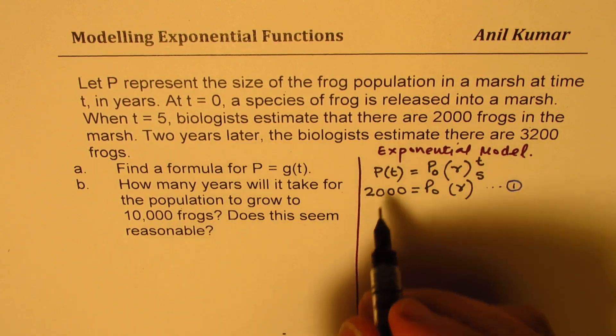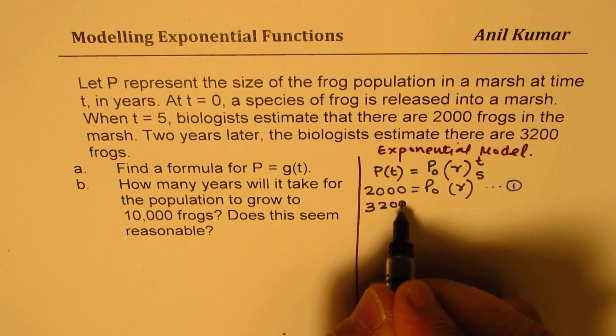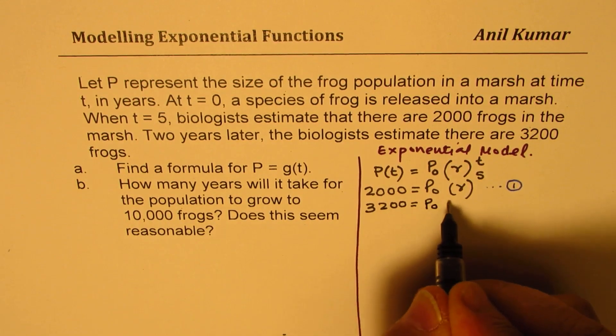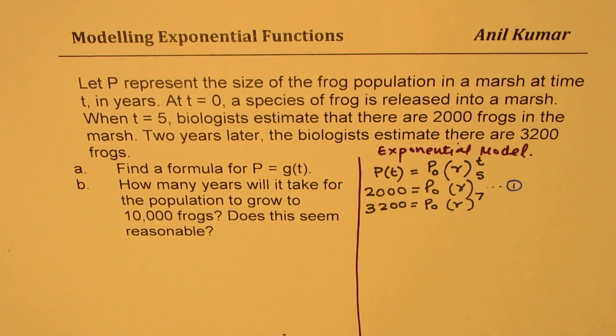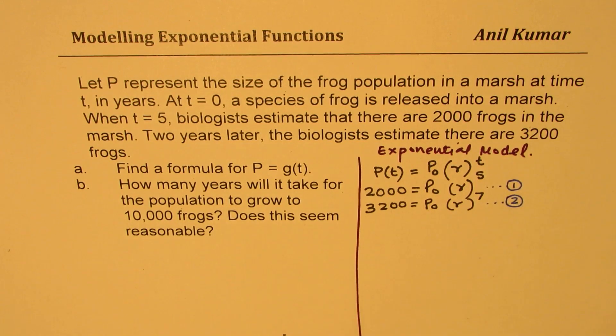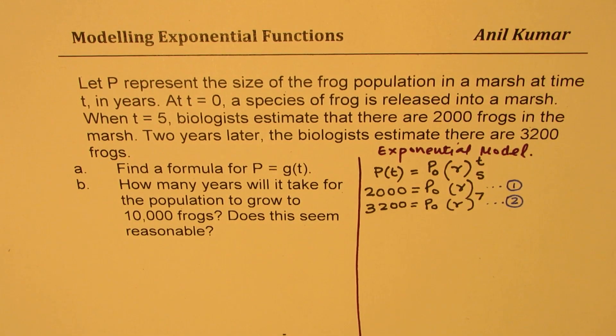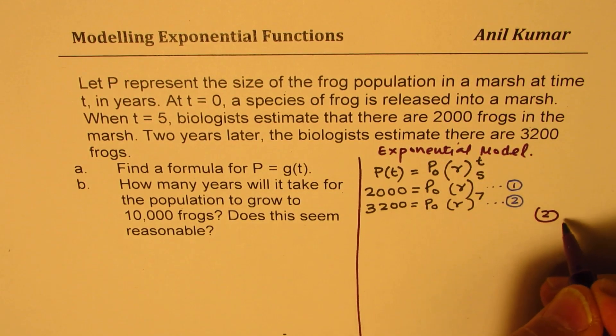Two years later, that means after seven years, the population grew to 3,200. We are assuming the same rate of growth, right? So now, if I divide one equation by the other, then we can find the value of r.